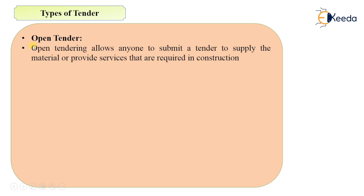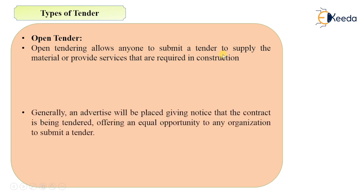The first type of tender is open tender. Open tendering allows anyone to submit a tender to supply the material or provide services that are required in construction. It will allow anyone to submit a tender.